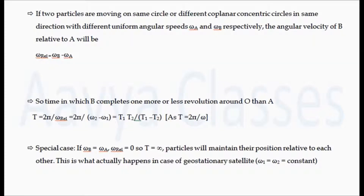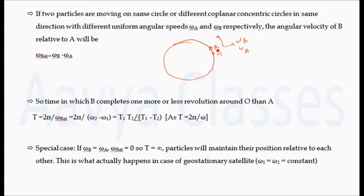Let's discuss the concept of relative angular speed. Suppose two particles are moving in a circle or different coplanar concentric circles in the same direction with uniform angular speed omega_a and omega_b respectively. Then the angular velocity of b relative to a will be omega_relative = omega_b minus omega_a. Here we have a circular path with object a moving with angular speed omega_a and object b moving with angular speed omega_b.